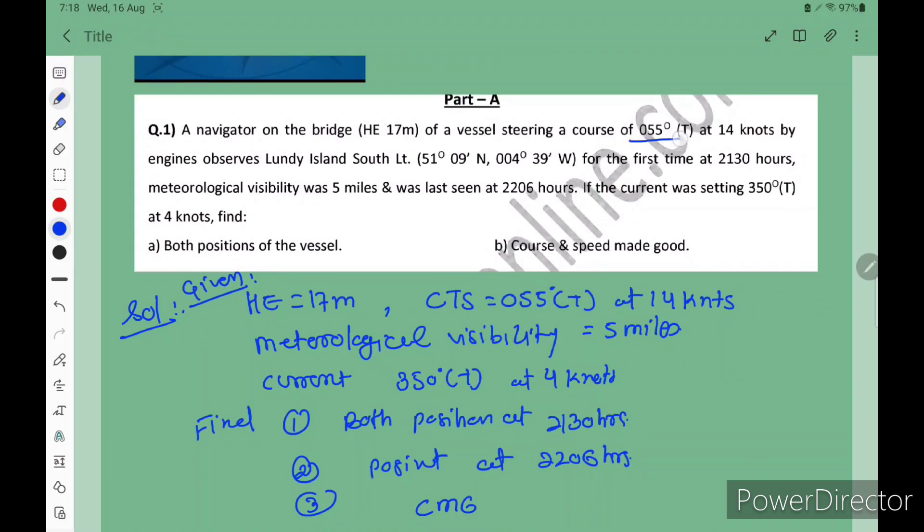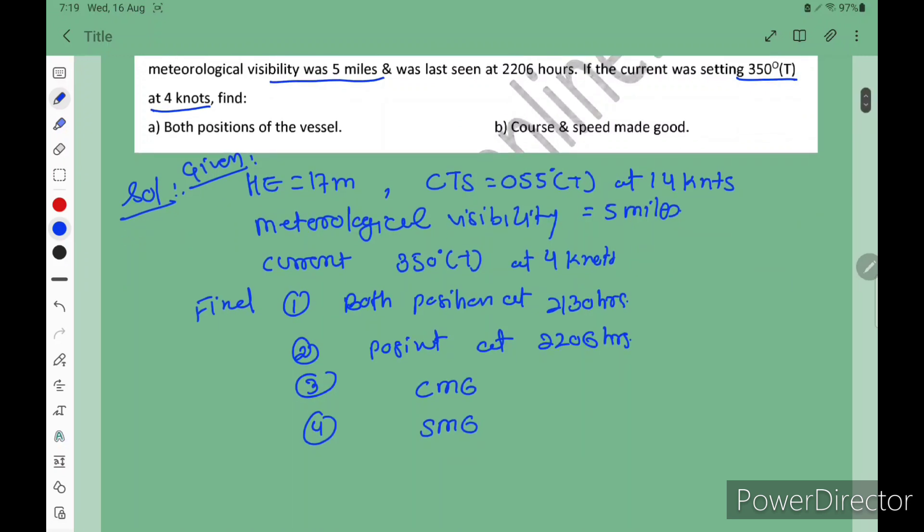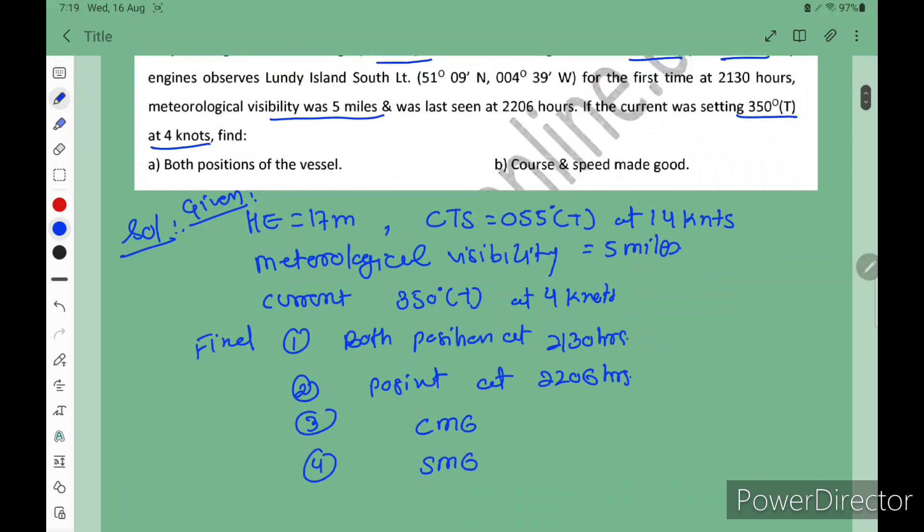You have CTS and engine speed plus current and certain rate of current, then meteorological visibility. So that means you have height of I, so in that case we have to calculate GR and LR. It is my highly recommended you have to make a rough plot on the answer sheet. Your examiner will not check your plot if your answer is matching close to your rough plot.